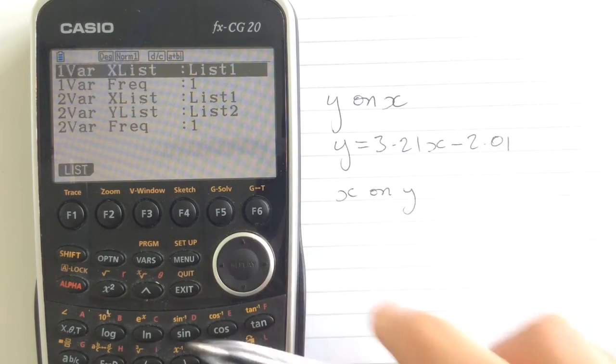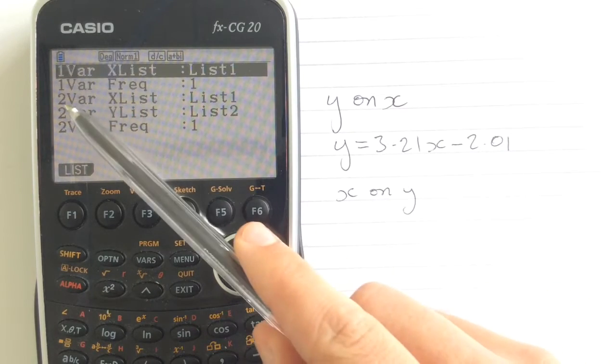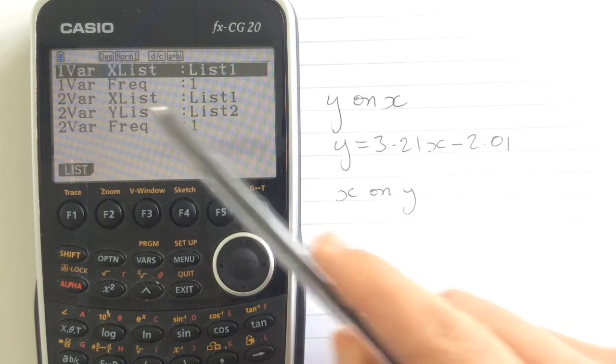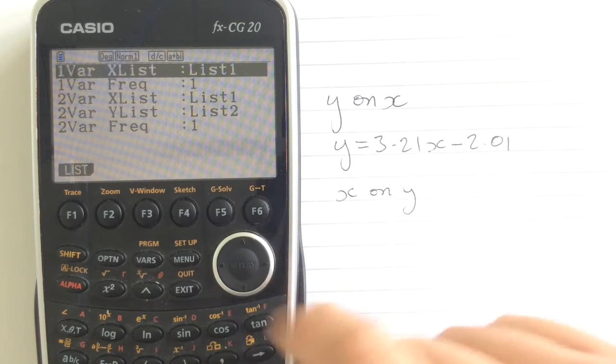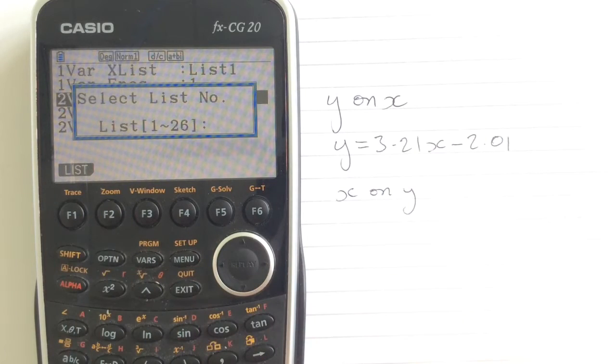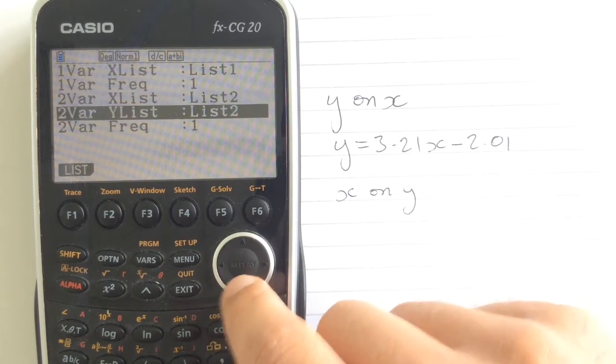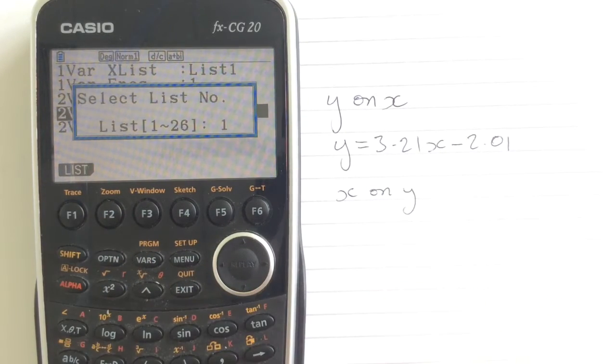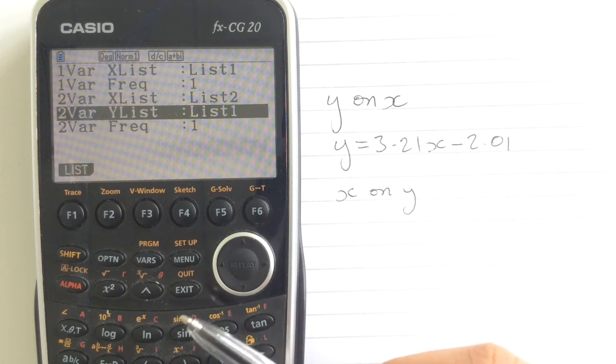But if we go into our settings and cheat it a little bit, we've said that our x list is in list one and our y list is in list two. If we go down and change those to say that it's now taking the x list from list two and the y list from list one, it's actually the reverse of what we would normally do.